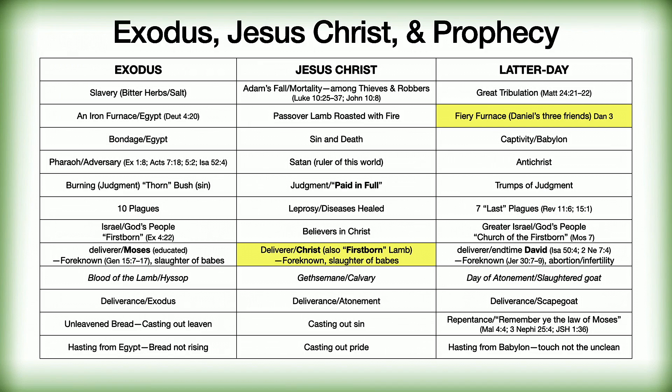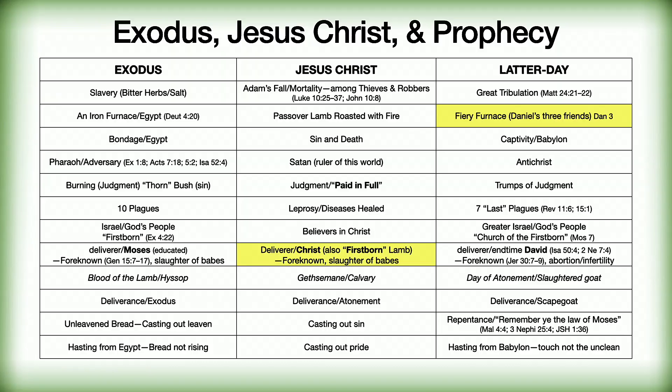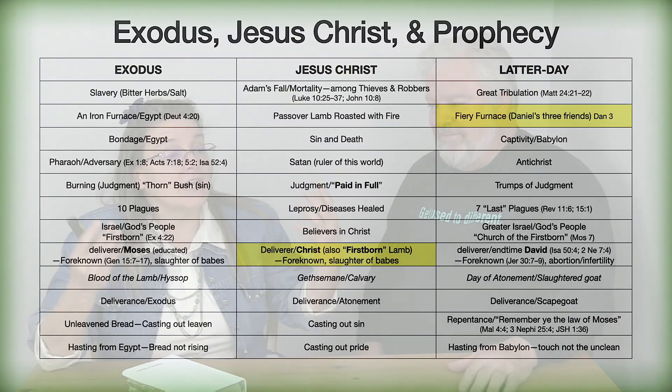We're going to start with a chart that helps us understand that what's going on in the Exodus is a type and a shadow — not only for prophecies that will be fulfilled by Jesus Christ, but we are looking at an end-time picture of what is going to happen in the grand finale. How God orchestrates history and types from the past to predict the future is basically our angle and approach to studying the Old Testament this year.